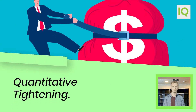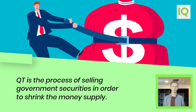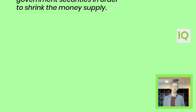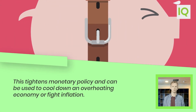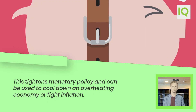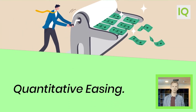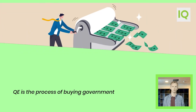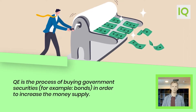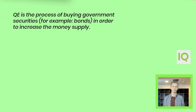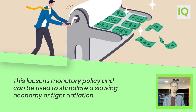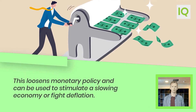Quantitative tightening, QT, is the process of selling government securities in order to shrink the money supply. This tightens monetary policy and can be used to cool down an overheating economy or fight inflation. Quantitative easing, QE, is the process of buying government securities, for example bonds, in order to increase the money supply. This loosens monetary policy and can be used to stimulate a slowing economy or fight deflation.